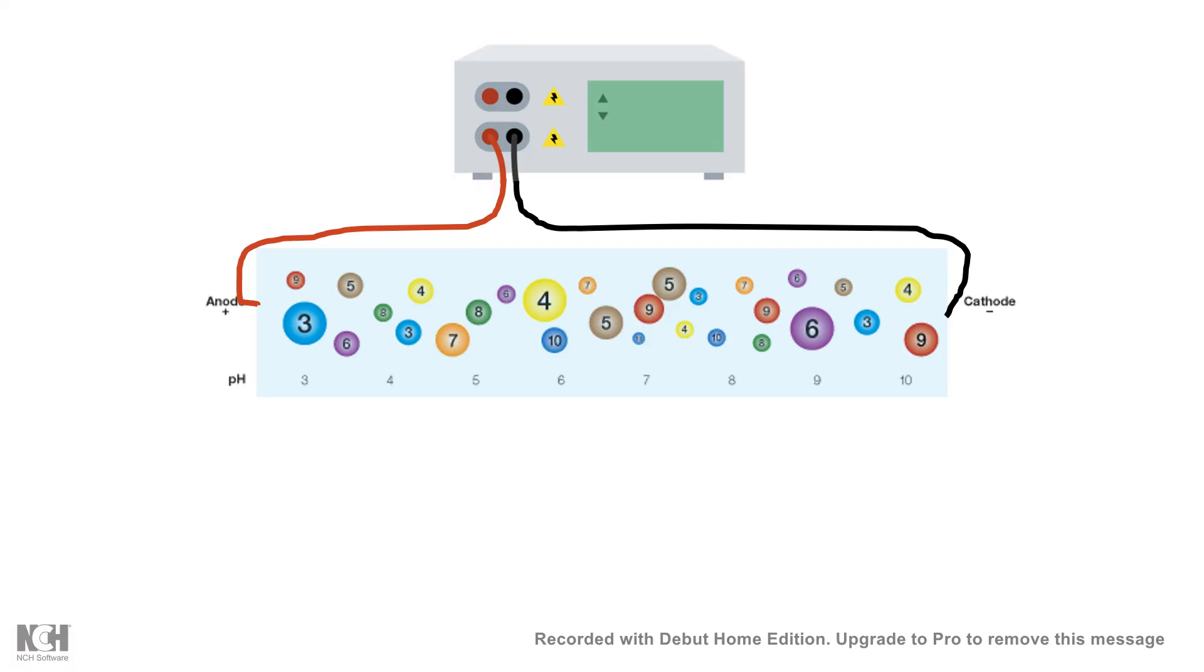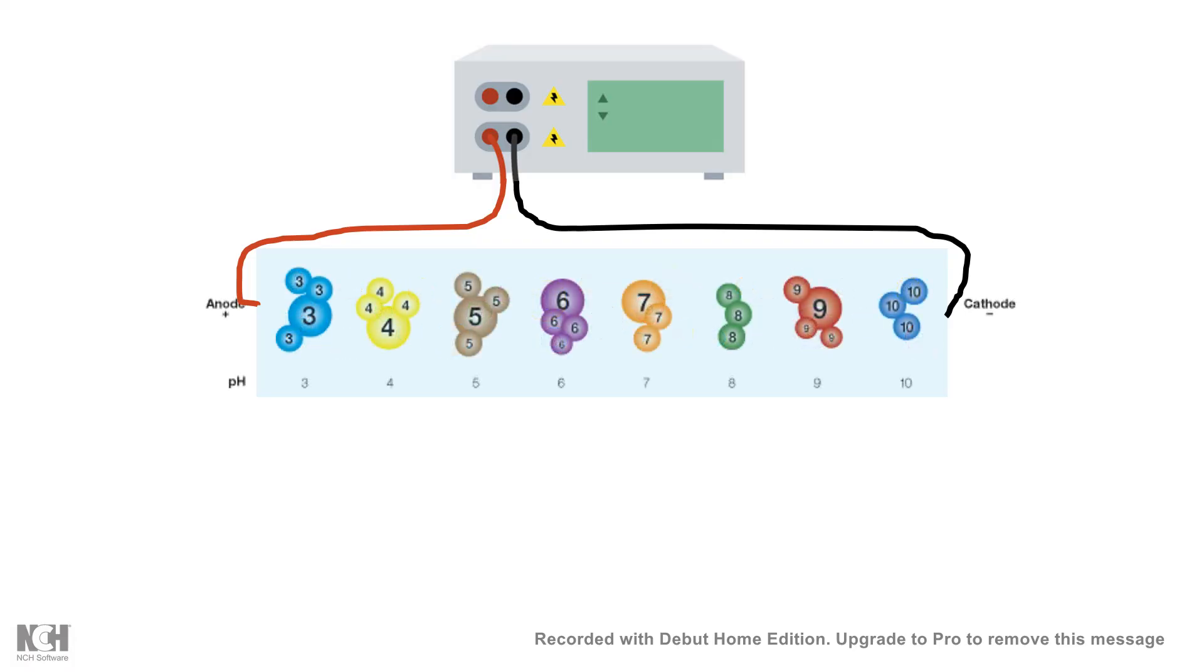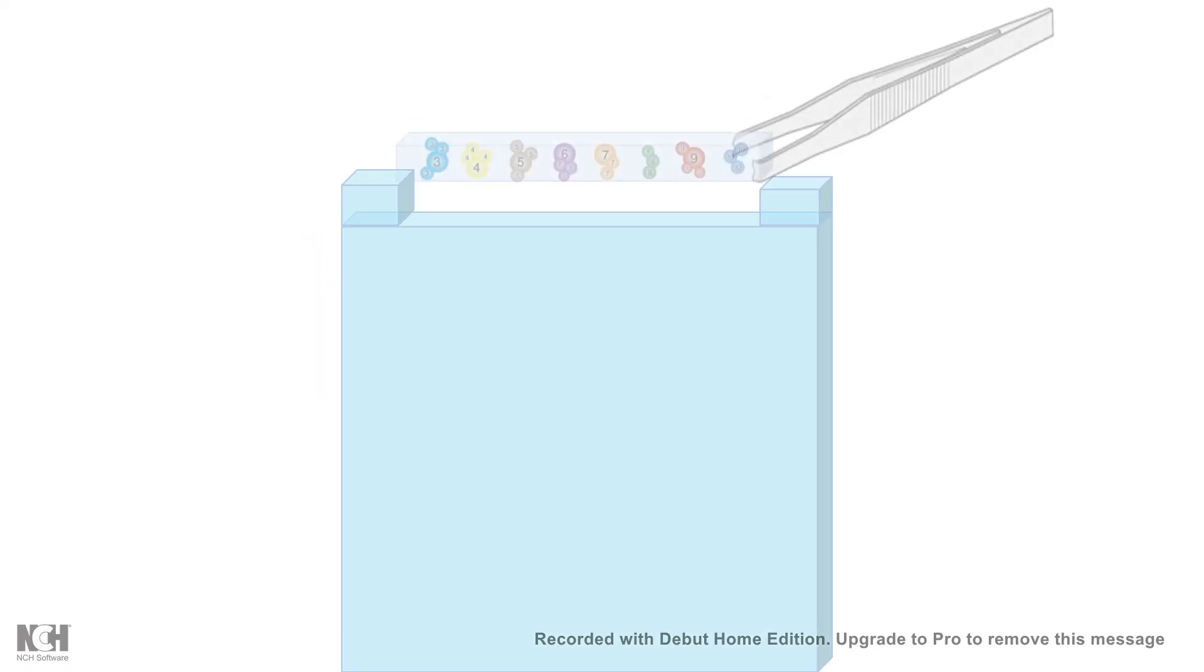At the end of this isoelectric focusing, all the proteins with a similar isoelectric point would come together and concentrate in the format of a band. Then we can take this IPG strip and load it onto a second gel.